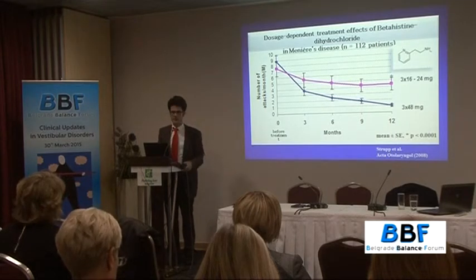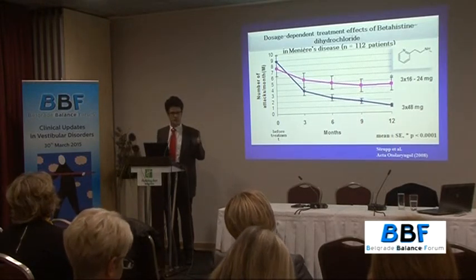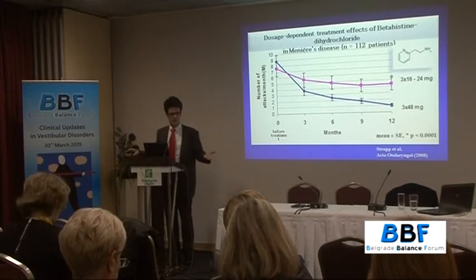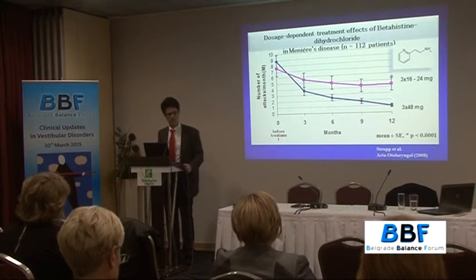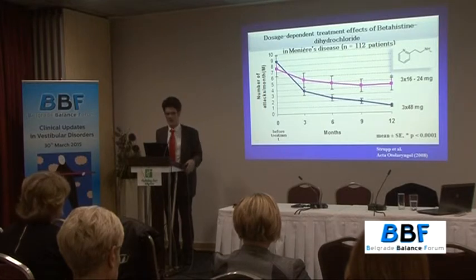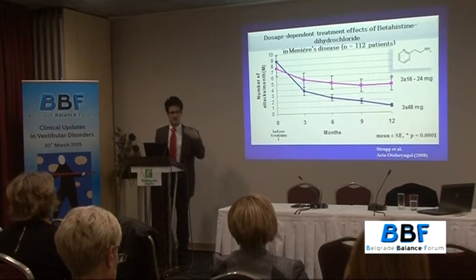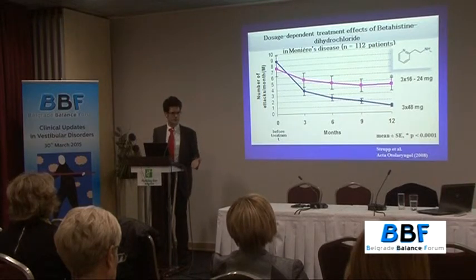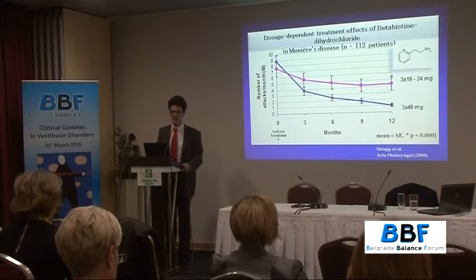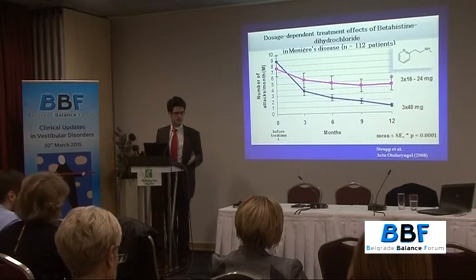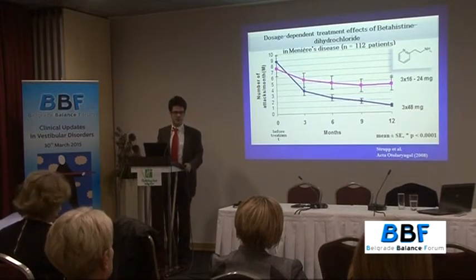Regarding therapy: there is a real mess in European practice — some place tubes, others make pressure changes, inject gentamicin, or give it in both ears. This is probably because in all Meniere's studies there is a very strong 30-40% placebo effect from any intervention. What we trust a lot is betahistine treatment. A one-year follow-up study by Michael Strupp comparing three times 48 mg versus three times 16-24 mg showed the higher dosage significantly reduces number of attacks more than the lower dosage.